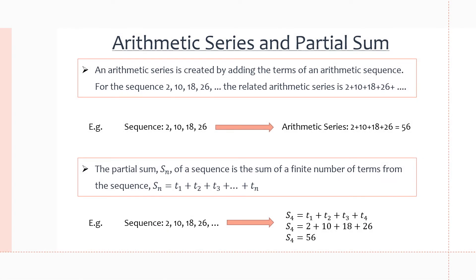So as I said before, an arithmetic series is created by adding the terms of an arithmetic sequence. So for the sequence 2, 10, 18, 26, and so on, that sequence keeps going. That's what we represent with dot, dot, dot. The related arithmetic series is 2 plus 10 plus 18 plus 26, and you sum all the rest of the terms in that sequence.